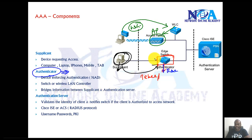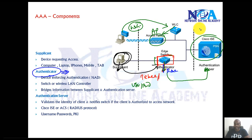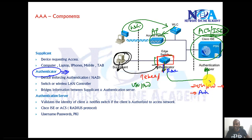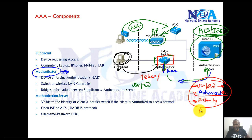Once the user provides his credentials, the Authenticator — the switch, access point, or wireless controller — does not authenticate directly. It simply forwards those credentials to another device called the Authentication Server. This server can be ACS servers or ISE servers, similar to Active Directory servers, which store all the username and password credentials and client information. They are also responsible for doing authorization, pushing authorization policies to the device, and keeping track of accounting. So the entire AAA can be done locally, but for most advanced options we don't use local AAA — this complete authentication, authorization, and accounting is done by the authentication servers.